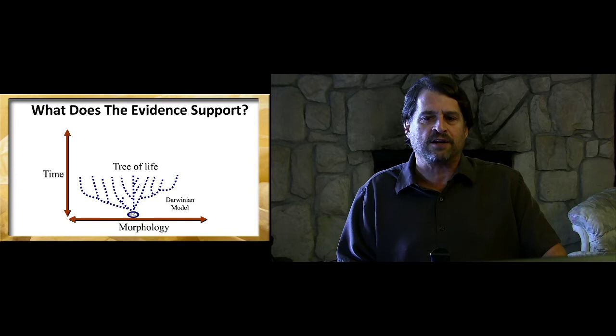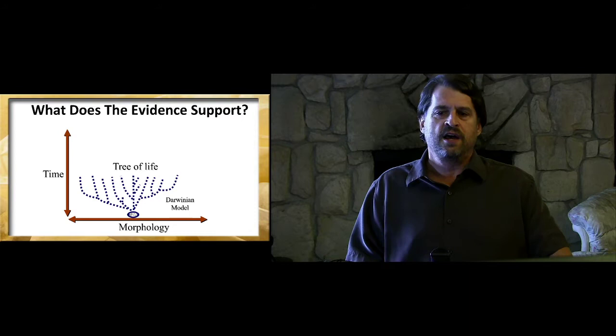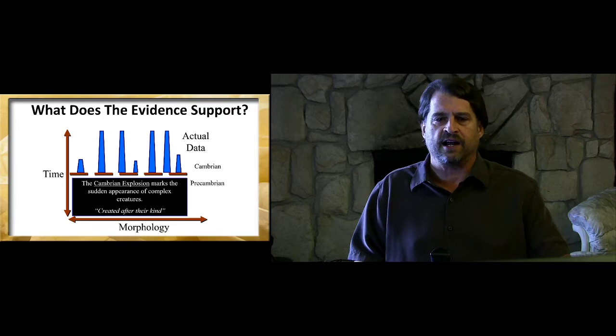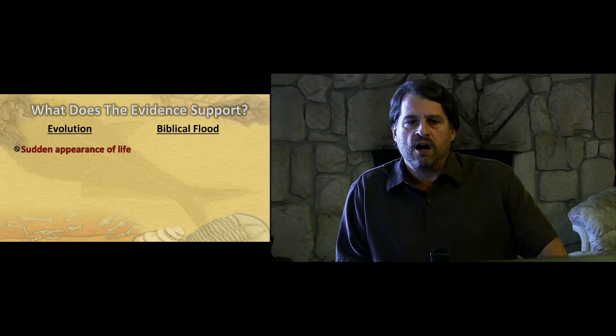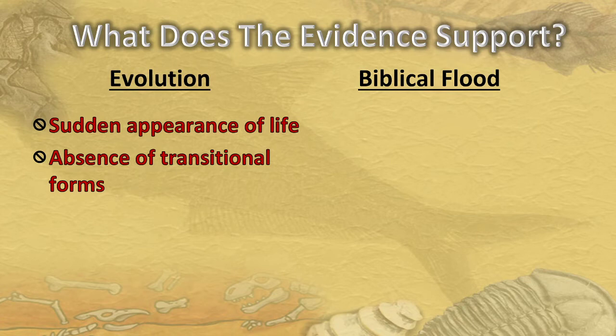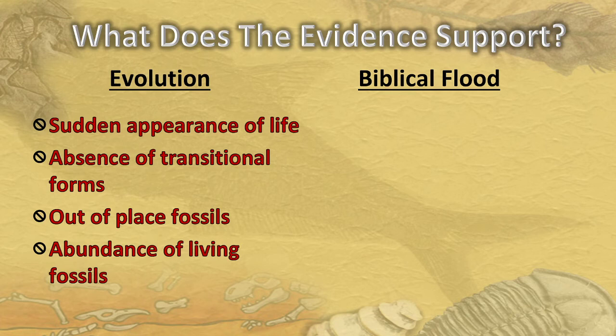Richard Dawkins even said nothing stressed Darwin more than the Cambrian explosion. That's because Darwin's imaginary tree of life is simply not supported by fossils. Rather than the slow and gradual accumulation of kinds of organisms, the fossil record shows a sudden explosion of life on earth. To summarize: do fossils support evolution? No. The sudden appearance of life in the Cambrian explosion argues strongly against it, as does the absence of transitional forms and the abundance of out-of-place and living fossils.